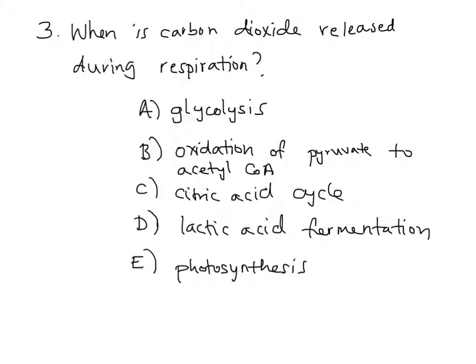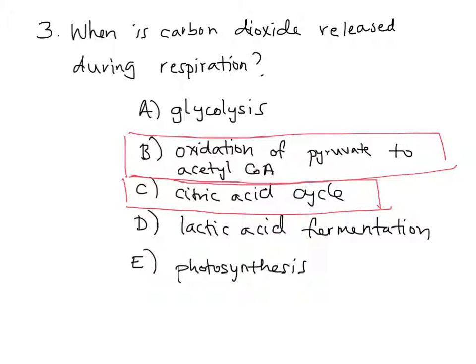All right. If you said the answer was B, oxidation of pyruvate to acetyl-CoA, and C, citric acid cycle, you'd be correct. In the process of glycolysis, all six carbon atoms are still retained in the pyruvate that results, and so glycolysis is incorrect. During lactic acid fermentation, there's no carbon dioxide that's released. Instead, what you might be thinking about is ethanol fermentation, in which carbon dioxide is released, but those are two different things. So D is incorrect.